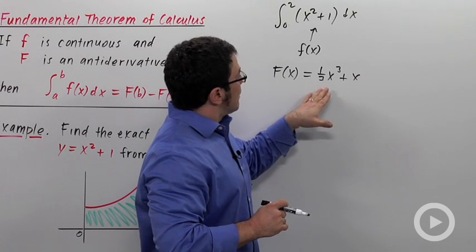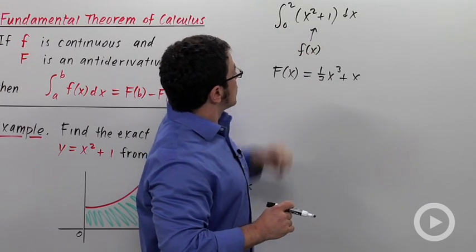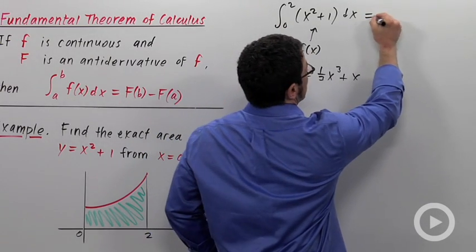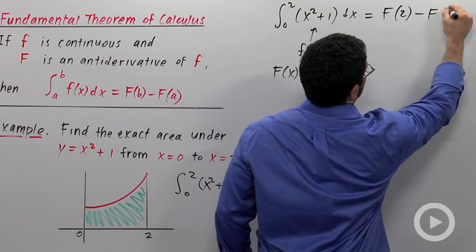So I need to evaluate this antiderivative at 2 and then evaluate it at 0 and subtract. So this is going to equal capital F of 2 minus capital F of 0.